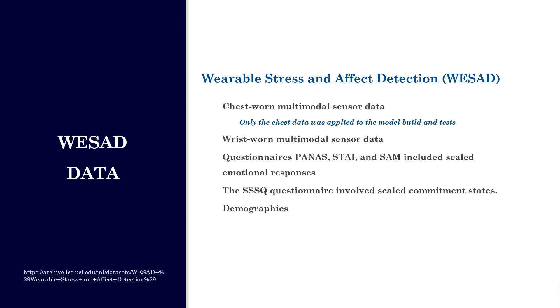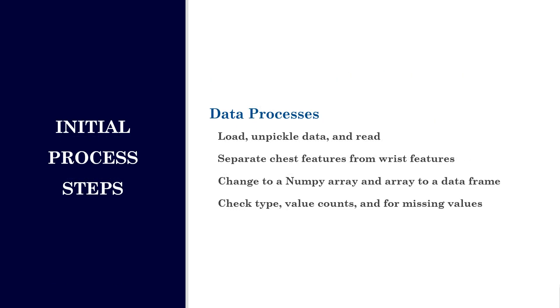Row counts were greater than three and a half million, but varied greatly between subject files. Guided processes include load, unpickle data, and read. Included separate chest features from the wrist features. Change the files to a numpy array and the array to a dataframe. I included check type, value counts, and for missing values, although that wasn't actually necessary.